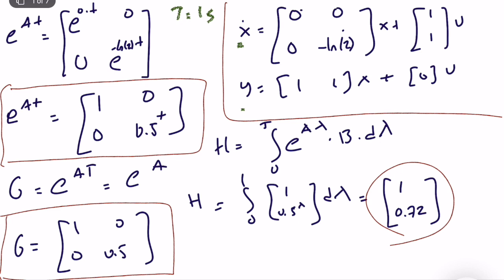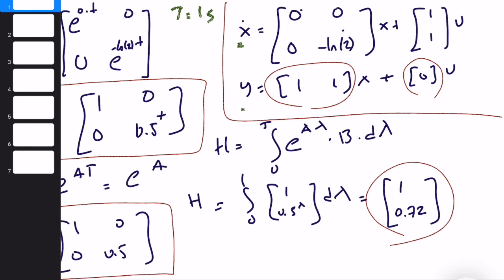What I have left is I need to compute C and D matrices. But I know that C and D matrices of the discrete time state space are exactly equal to the C and D matrices of the original continuous time state space. So let's write everything in a clean framework. x[k+1] is equal to 1, 0, 0, 0.5, x[k] plus 1, 0.72, u[k]. And y[k] is simply equal to 1, 1, x[k]. That's it, we don't have any D.